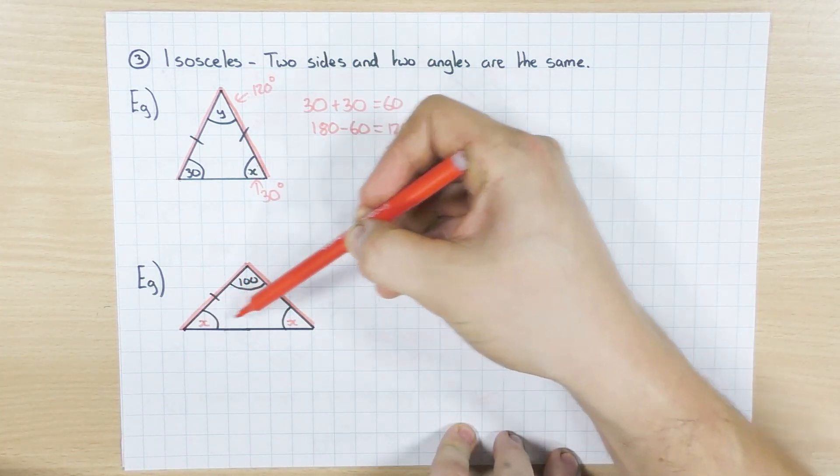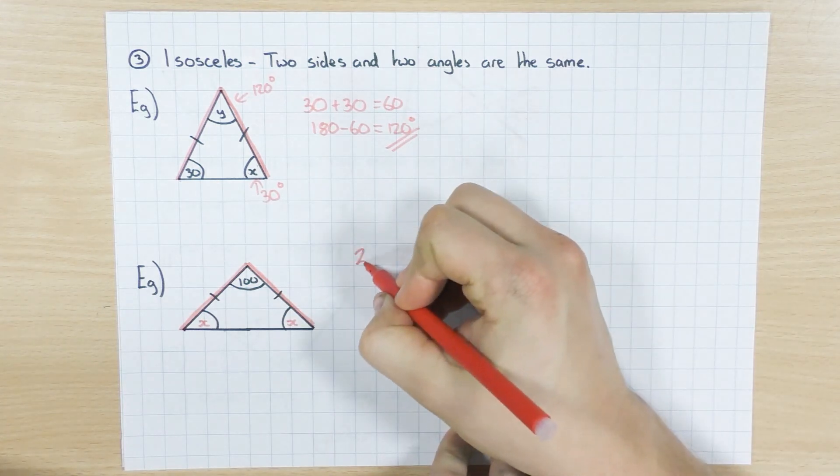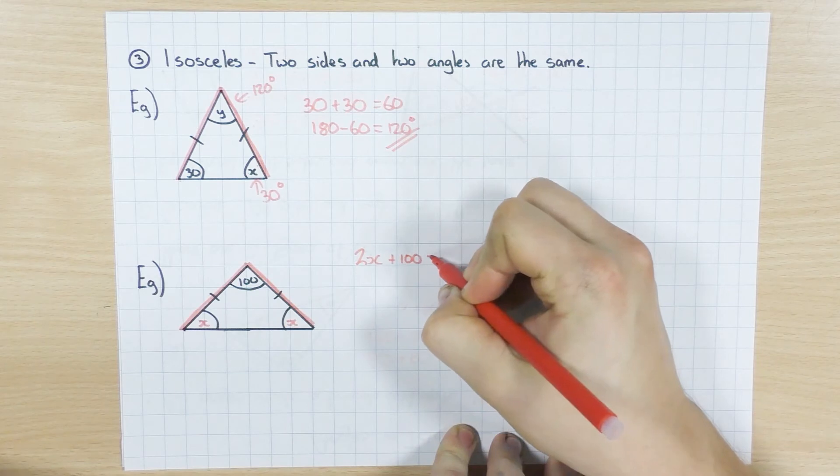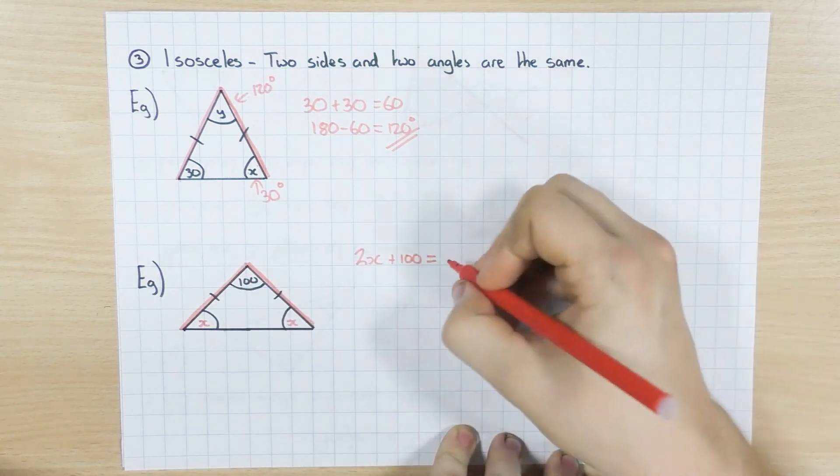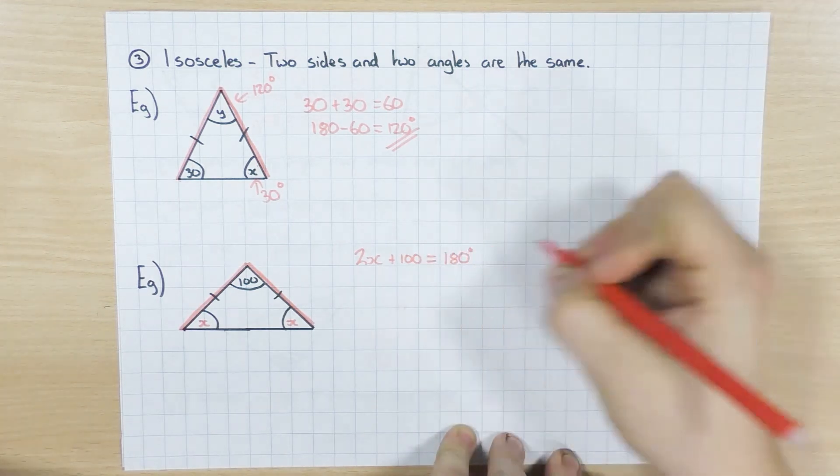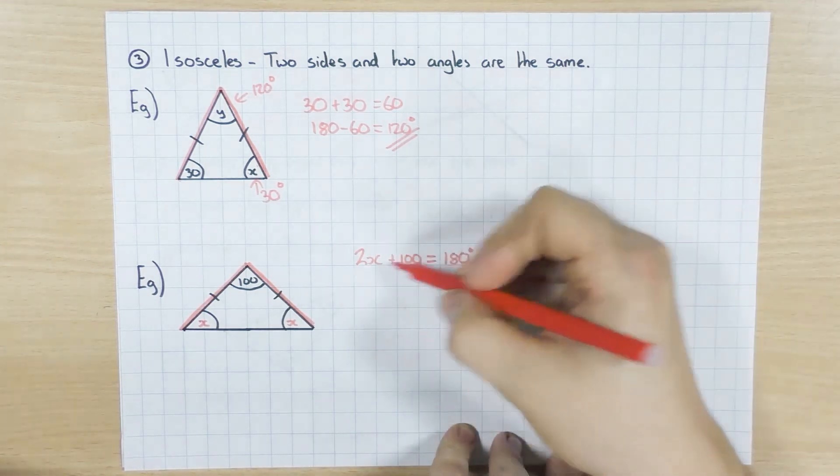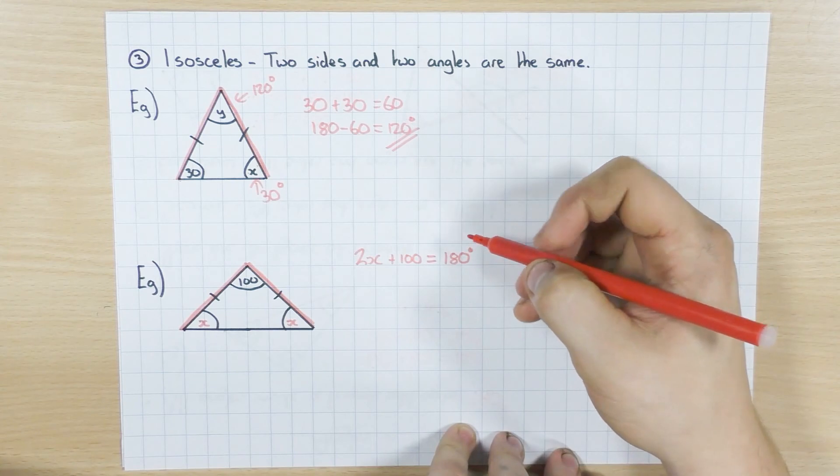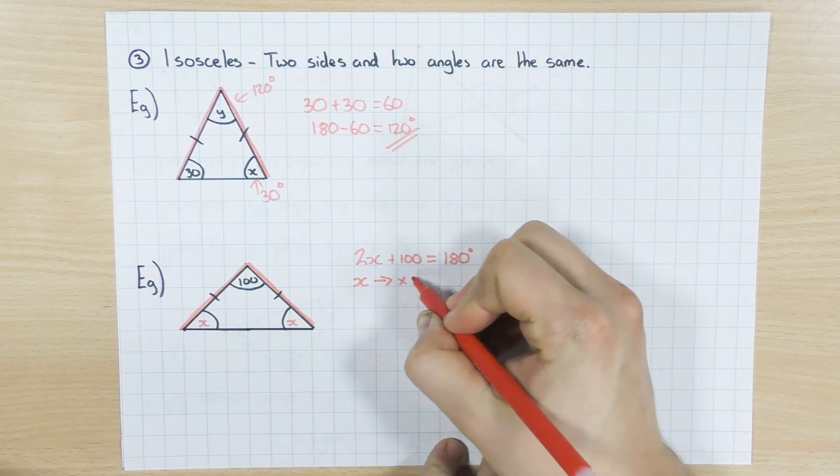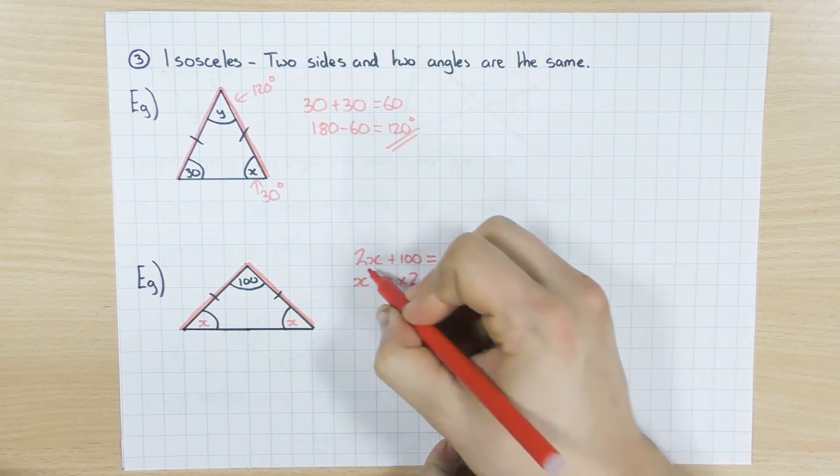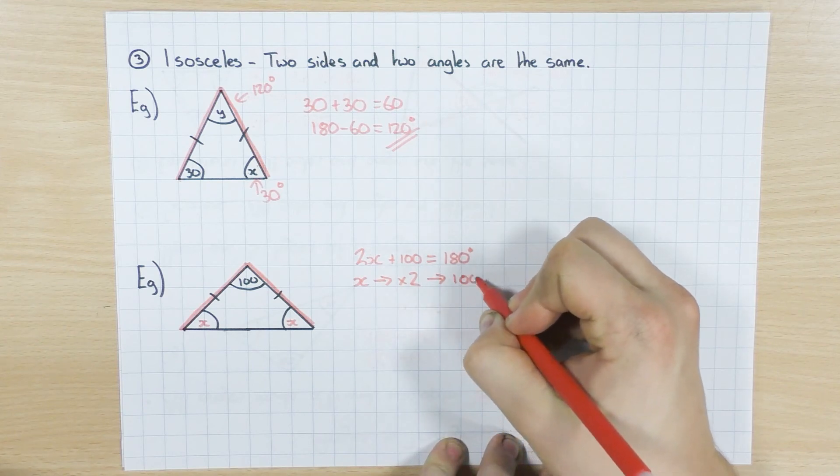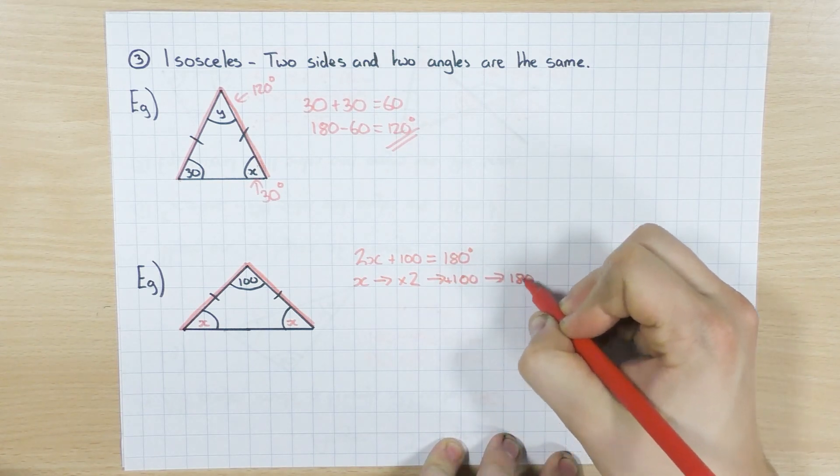If I add all these angles up, x plus x is 2x plus the 100. And I know that if I add all those up, which I've just done here, that's going to equal 180 degrees. Okay? So again, using the balance method or the flowchart, whichever one you want, I'll stick with the flowchart. But we can solve this. So x times by 2 first, because of BIDMAS, I times first. Then I add 100, and I get 180 degrees.